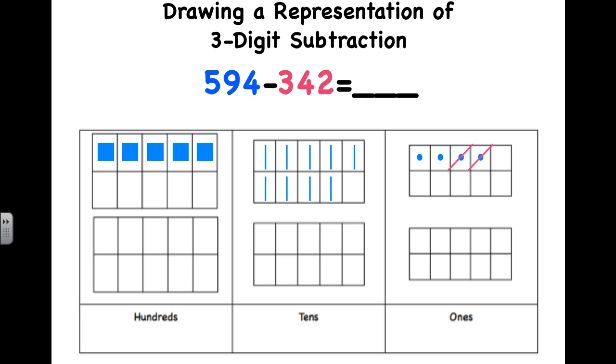So, we're just going to mark a neat slash line through the ones that we're marking out. So, we've taken away two ones. Next, we need to take away four tens. So, one, two, three, four.